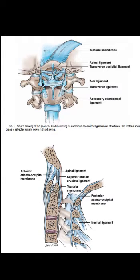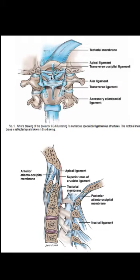We can see that first there's a transverse ligament, which is part of the cruciform ligament that runs from one side of the atlas to the other, keeping the Dens or Odontoid process up against the anterior arch of C1. We also see the alar ligaments coming off the top of the Odontoid process and attaching to the foramen magnum.